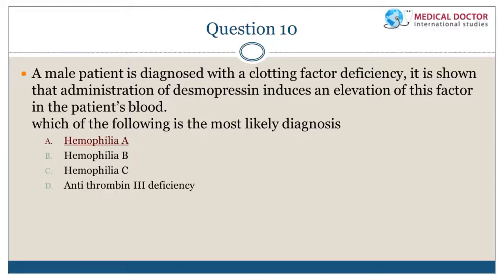Practice question: Desmopressin increases von Willebrand's factor release, which increases protection of factor 8. Since factor 8 is deficient in hemophilia A, desmopressin is also useful in mild hemophilia A.